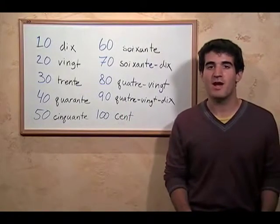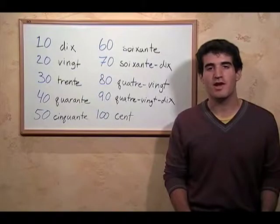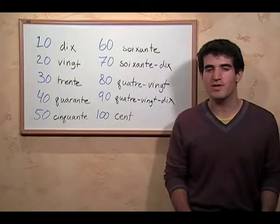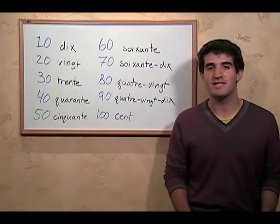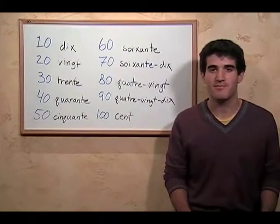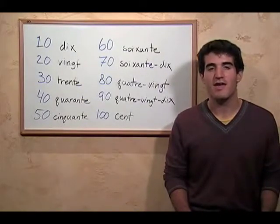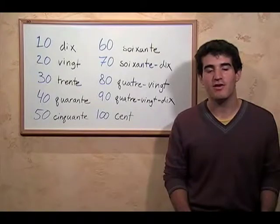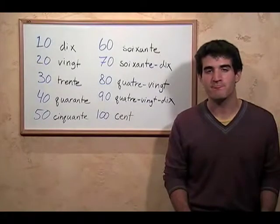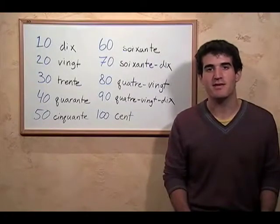Now you may notice that up through sixty, each one has its own word. But at seventy, instead of its own word, we say soixante-dix, which is really sixty-ten, which is seventy. And then for eighty, we say quatre-vingt, which is four twenty, and four times twenty is eighty.